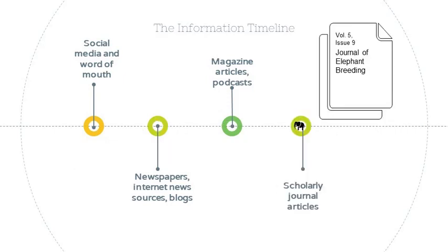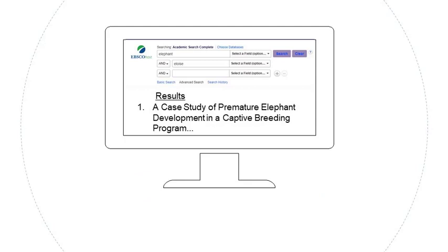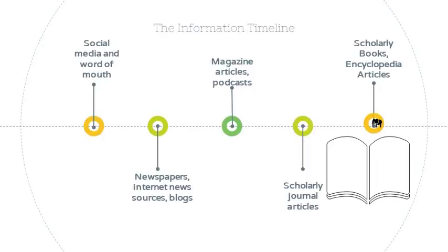Back to Eloise the elephant. Because Eloise was part of a breeding program and was born prematurely, scientists or scholars might write about her in zoology or veterinary research journals, which are often found in library databases. This would involve meticulous original research and could take many months, or even years, to be published. Years down the road, the information from the popular sources and the scholarly articles related to Eloise will be analyzed and used to write books and encyclopedia articles.